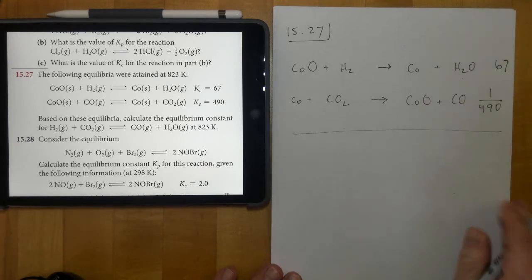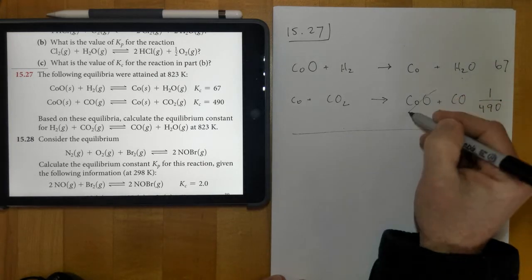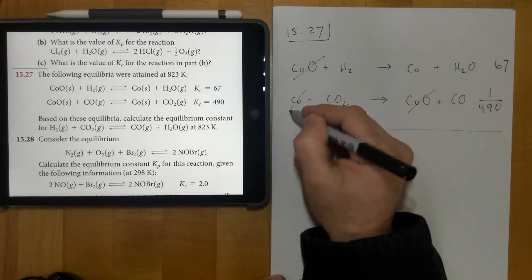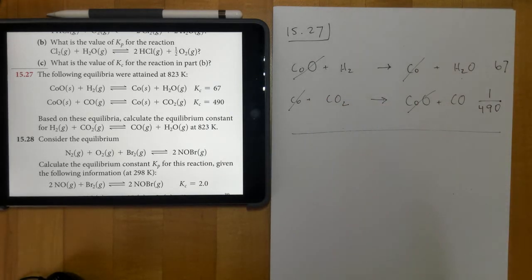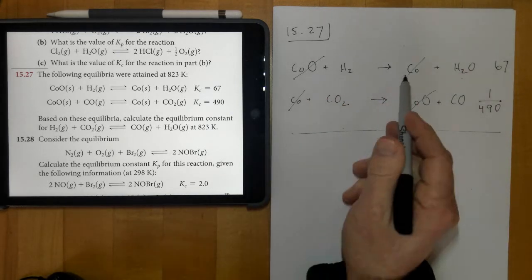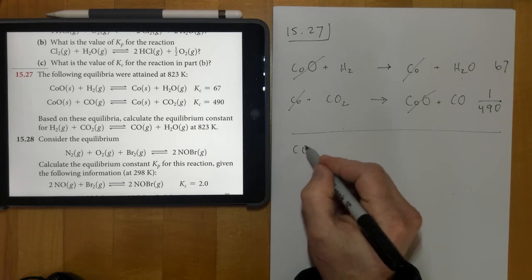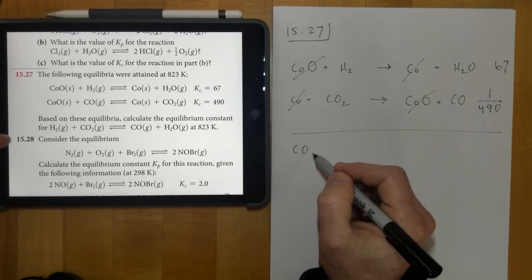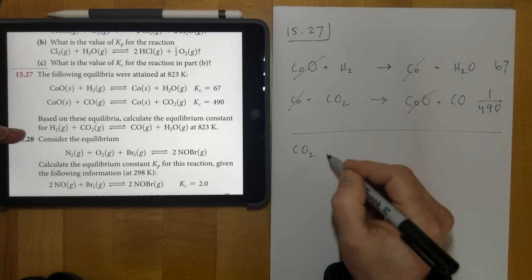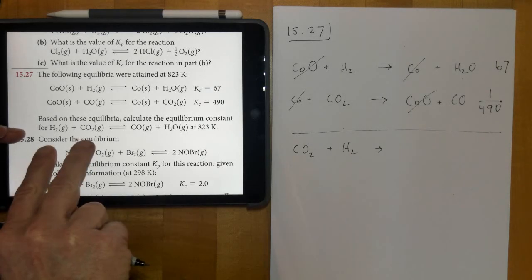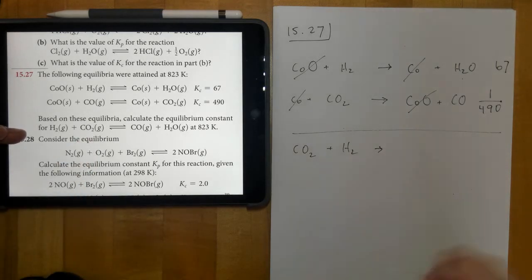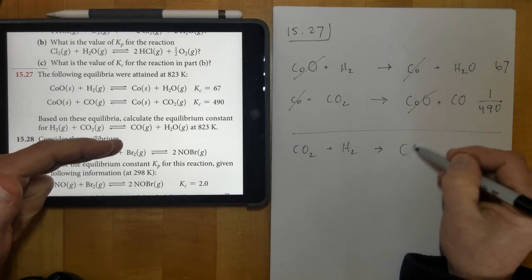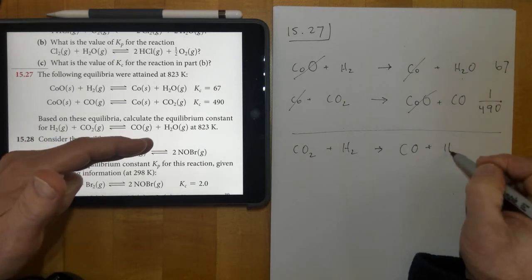And then if we add these two reactions together, you'll see that the COOs cancel and the cobalts cancel, the COs as well. And so they end up with CO2 and H2 together. Notice how that's exactly the same as what we have right here. And then we end up with CO and we end up with H2O.